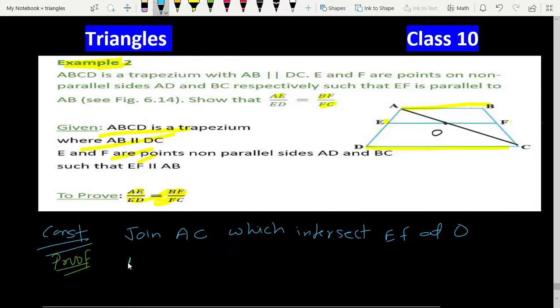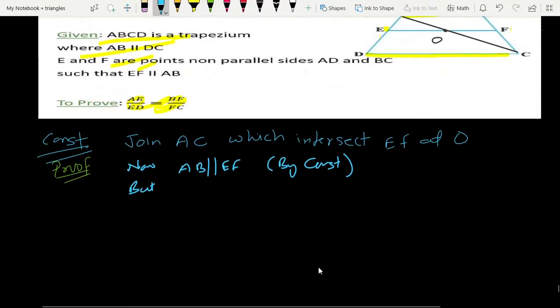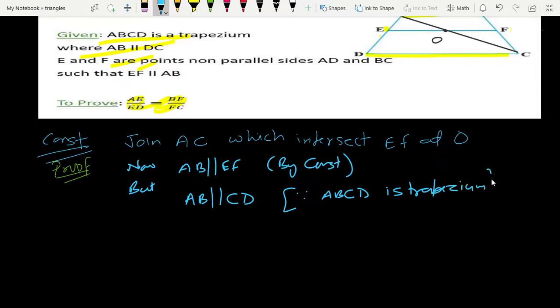Now we see that AB parallel to EF by construction. But it is given that AB parallel to CD due to trapezium. So EF parallel to CD.